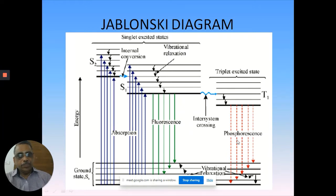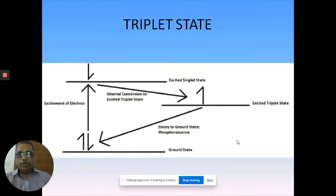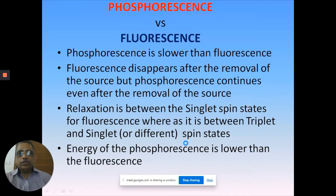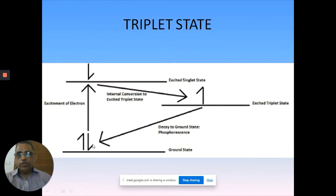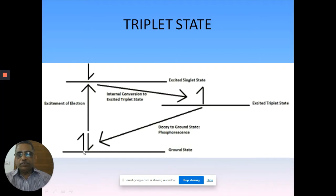That is our interest. We already know what the triplet state is. To recall again, it is the difference in the orientation of the electrons. Look at the ground state, which is a singlet state. When you excite it, one of the electrons goes to the higher energy level - the higher singlet state. The only difference is the electron orientation is opposite here; it is the singlet excited state. We are always comparing it to the ground state orientation of the electron.